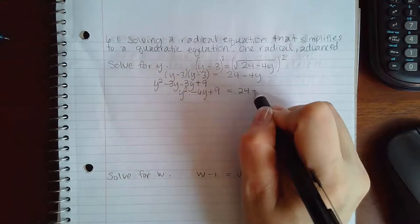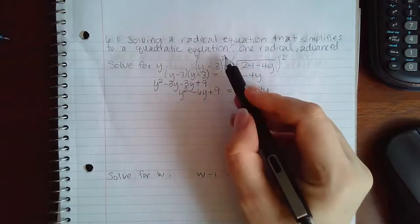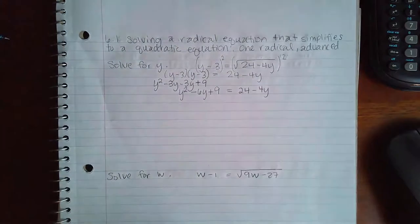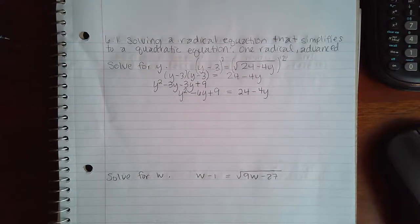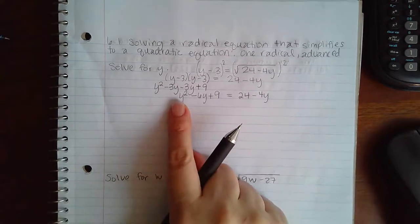Which is not what you're going to get if you just try to square these guys individually. So be sure that you square that binomial properly. Now I do have a quadratic still.